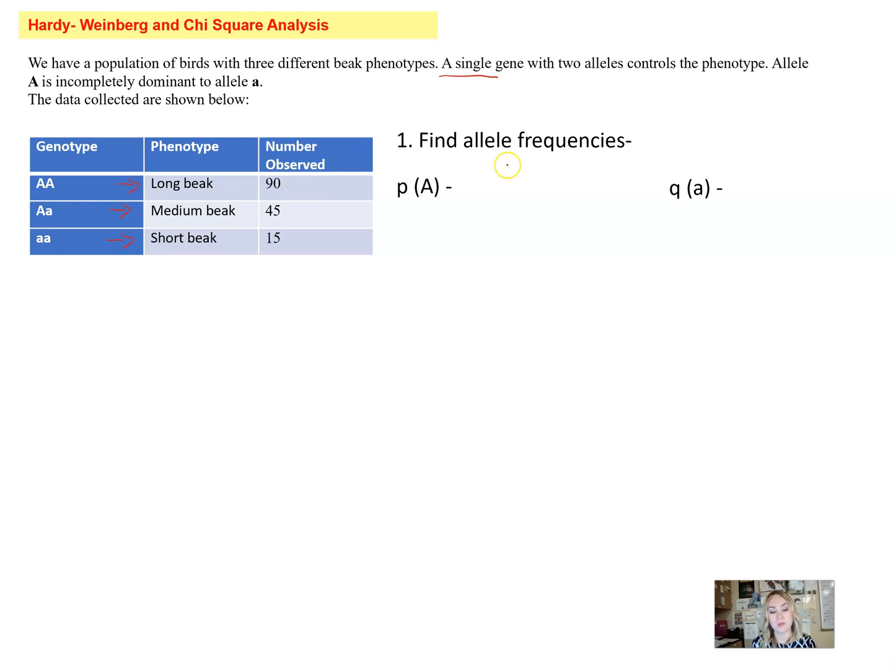Notice we have big A big A, 90 of those, so that's the genotype, meaning we have 90 big A plus 90 because remember genotype is made up of two alleles. Then we also see one big A right here in a medium-sized beak, so we're going to have to add 45 and divide by the total number of alleles we have in the population. Since we have 150 genotypes, that gives us 300 alleles total in the gene pool. When we do the math here we're going to get 0.75.